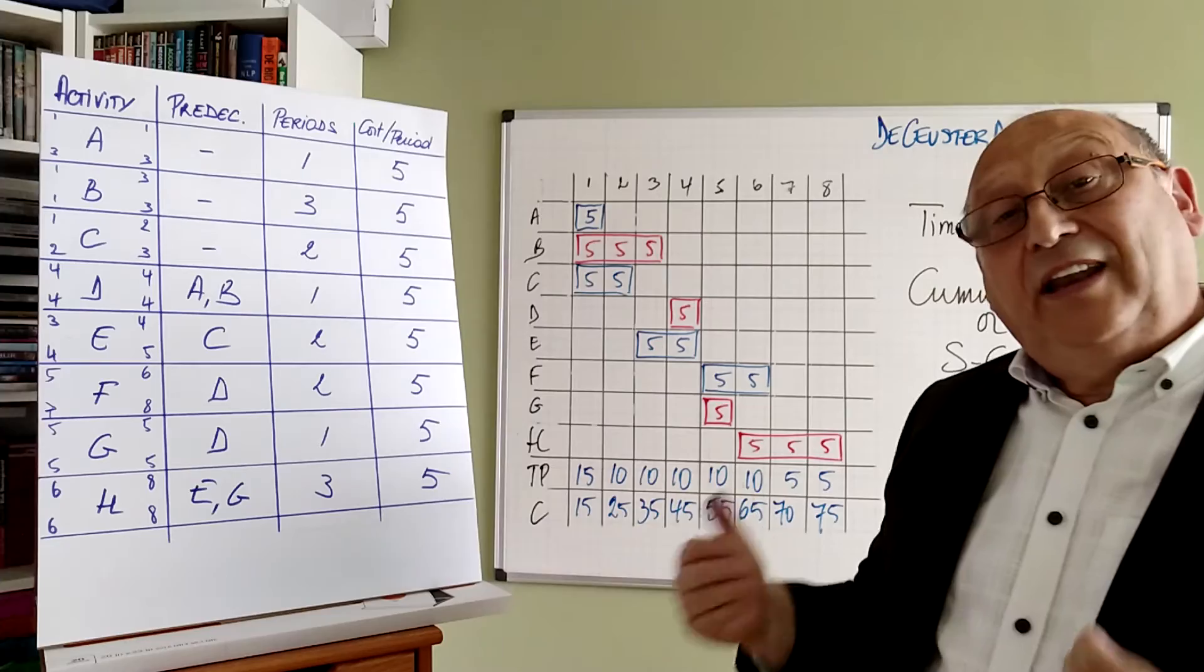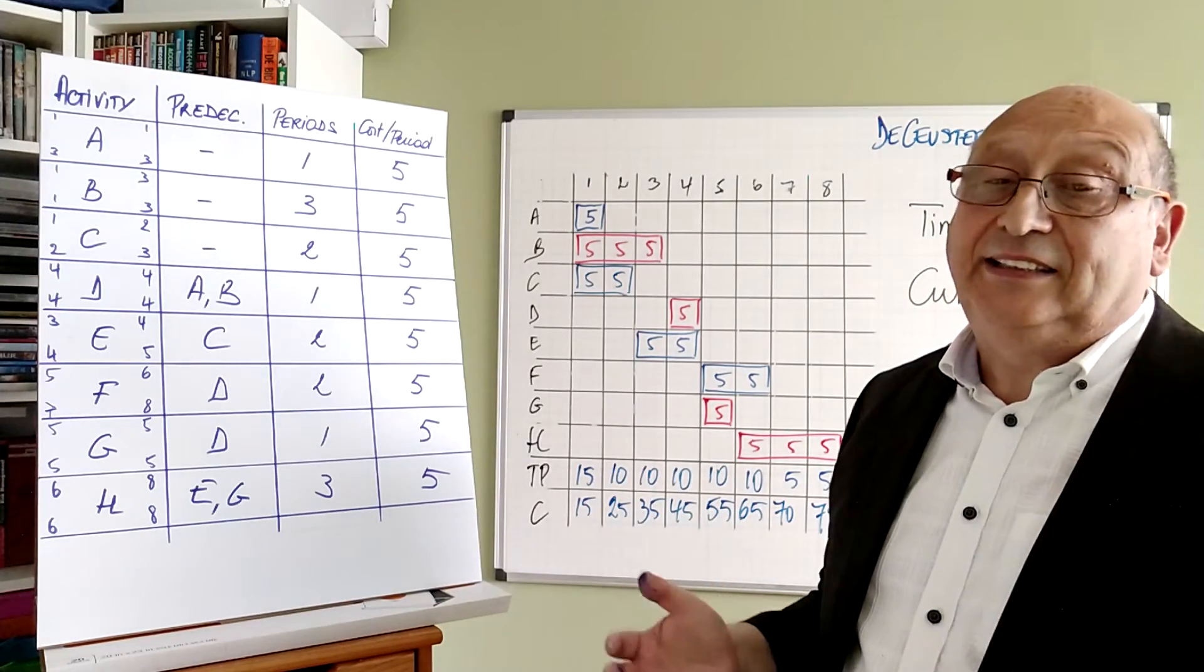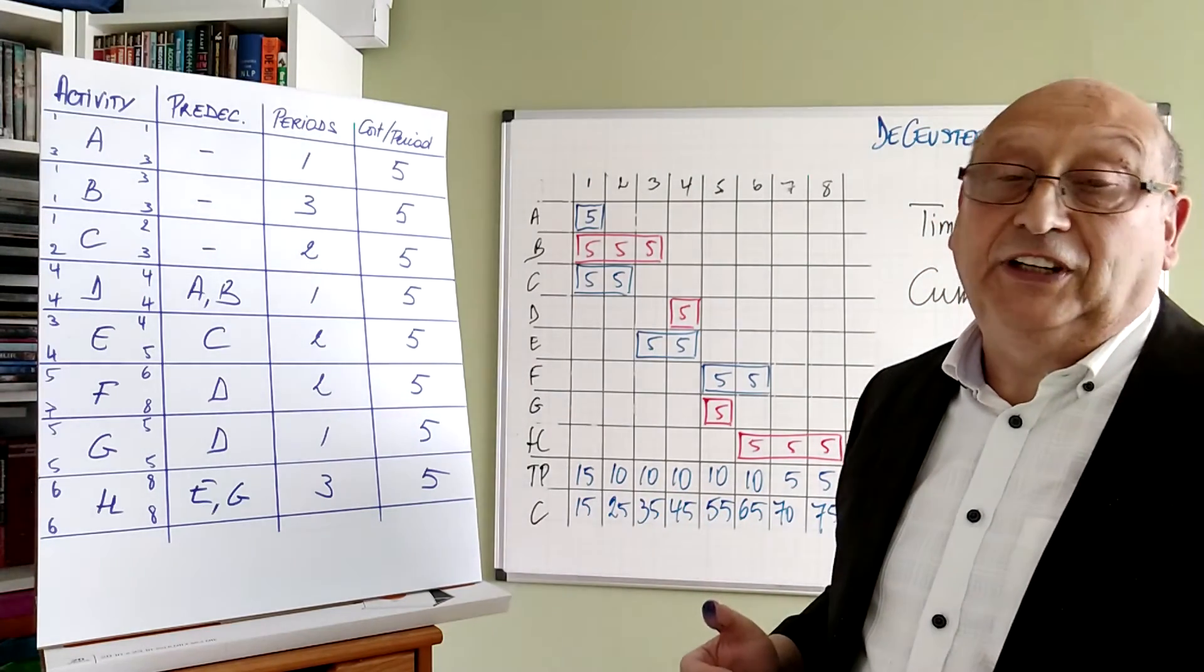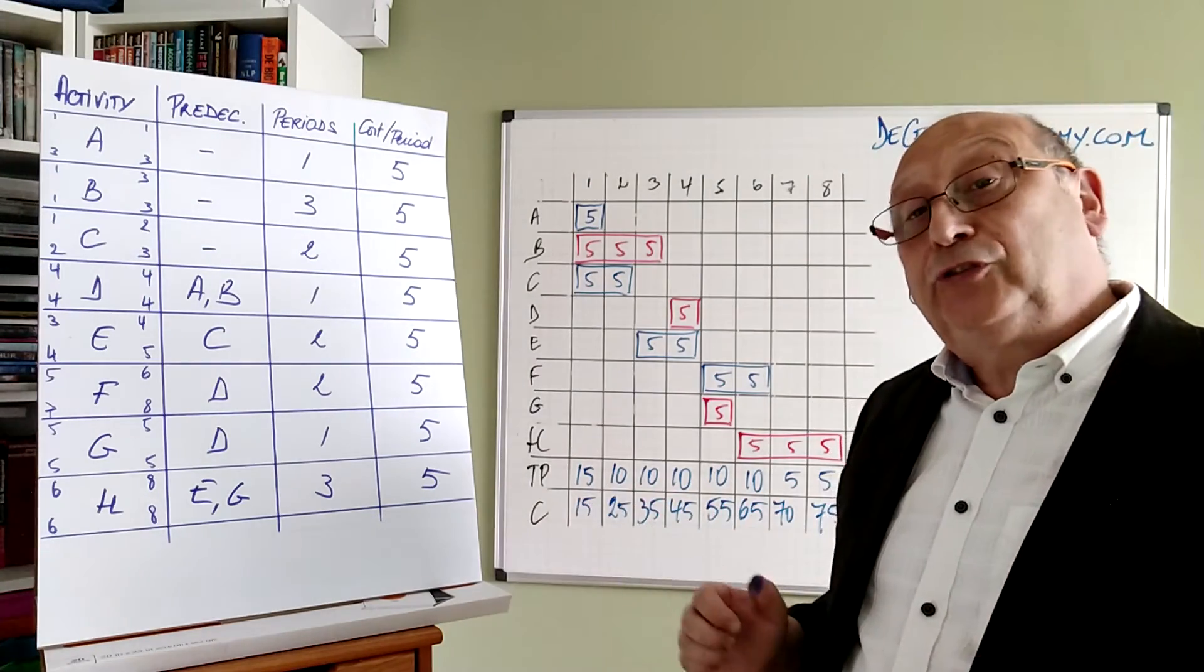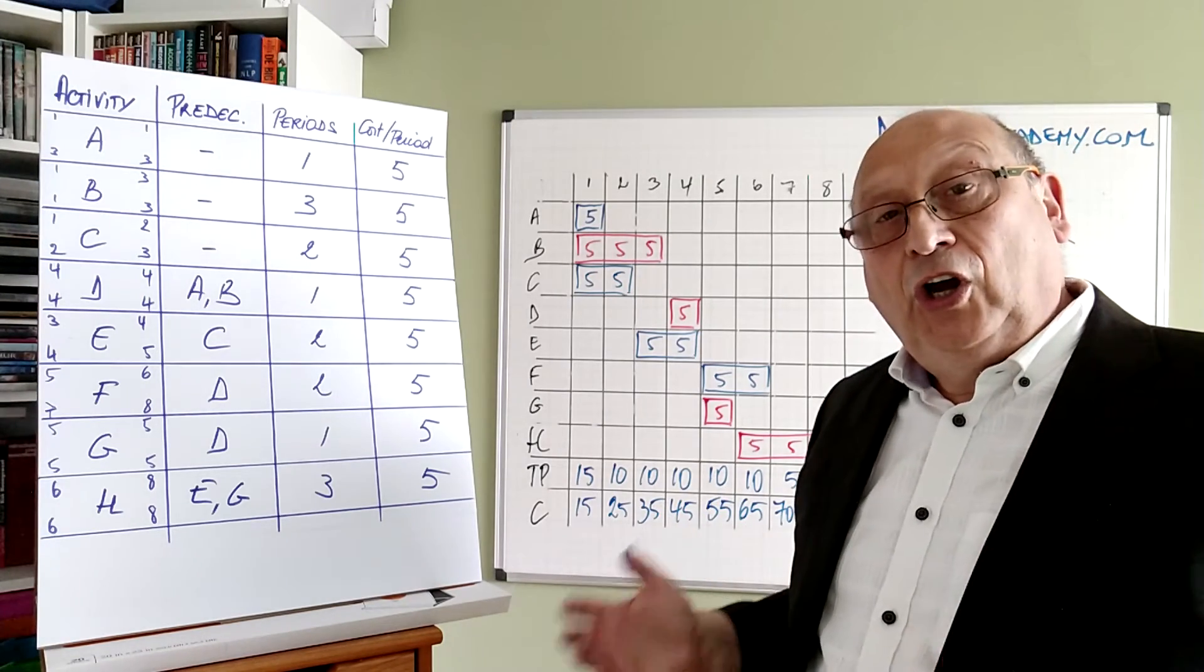And then we can adjust the activities and we'll find the planned start and finish dates. And all those curves together will give us the critical path position of the project.